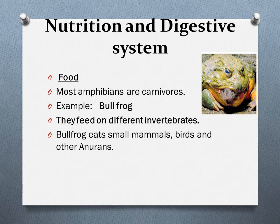Nutrition and digestive system in amphibians: there are various types of foods consumed by amphibians. Most adult amphibians are carnivores that feed on different invertebrates. Some anurans like frogs and toads have a more diverse diet — for example, a bullfrog eats small mammals, birds, and other anurans. The prey size and availability determine the type of diet.